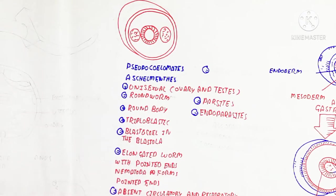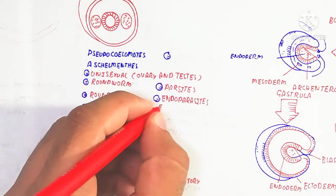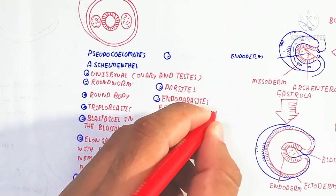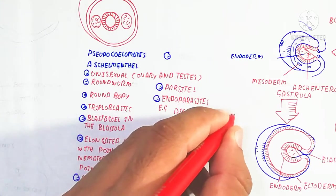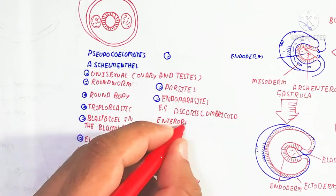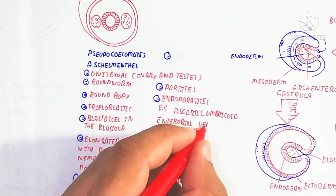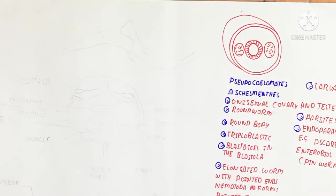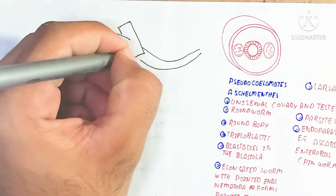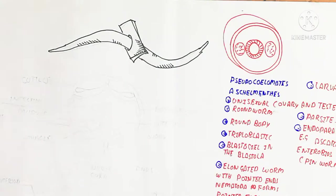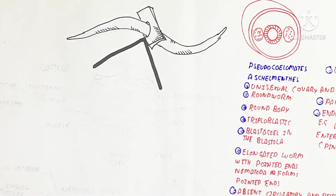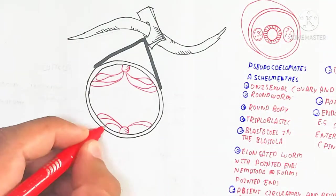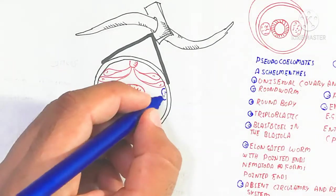The blastocoel is an important character that produces the pseudocoelomates. It is the precursor of blood, and through further evolutionary process it gives rise to hemolymph and hemoglobin, which contain a protein. The nematode is an endoparasite — examples include Ascaris lumbricoides and Enterobius vermicularis.